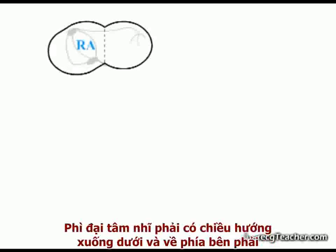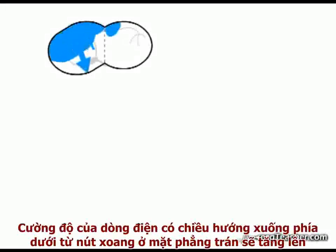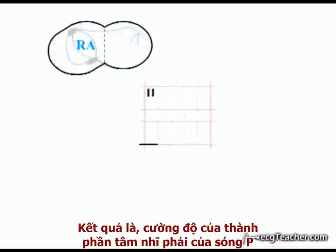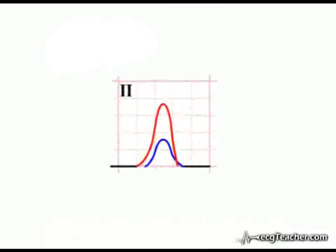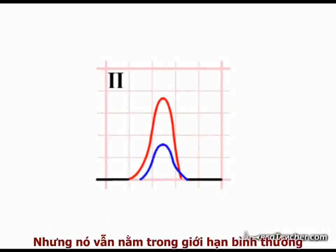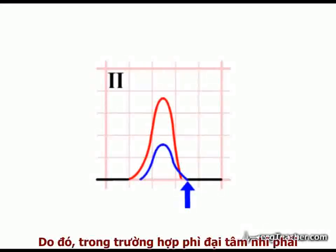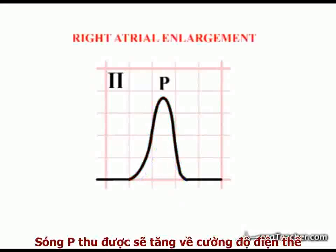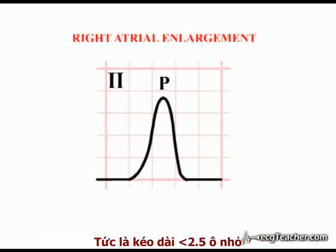The right atrium enlarges downwards and towards the right. In right atrial enlargement, therefore, the magnitude of current spreading downwards from the SA node in the frontal plane is greatly increased. Consequently, the amplitude of the right atrial component of the P-wave increases dramatically in the inferior leads, illustrated here in Lead 2. However, even though the right atrial component is prolonged in duration, it still falls within the limit of normality defined by the end of the left atrial component. Therefore, in right atrial enlargement, the recorded P-wave is increased in amplitude but is of normal duration, that is, less than 2.5 small squares in width.